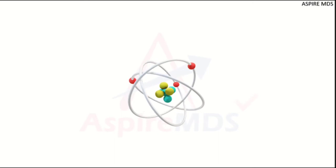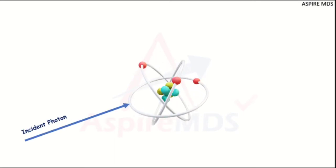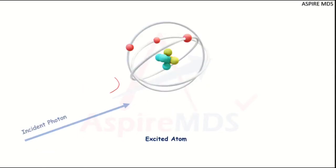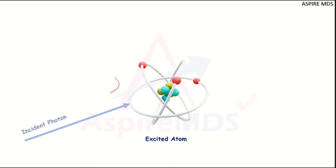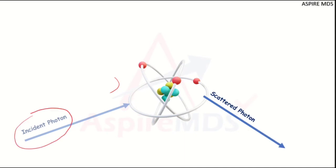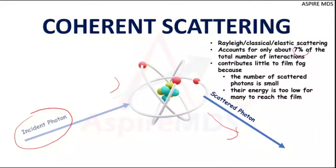When a low energy photon interacts with an atom, it gives up all of its energy to that atom, causing the atom to become excited. After some time, this excited atom returns to its normal state and gives up the energy in the form of another photon. This new photon has the same amount of energy as the incident photon, but its direction is changed — effectively the direction of the incident photon is changed. This type of scattering is known as coherent scattering, and it accounts for seven percent of all interactions. Its other names are Rayleigh, classical, and elastic scattering.